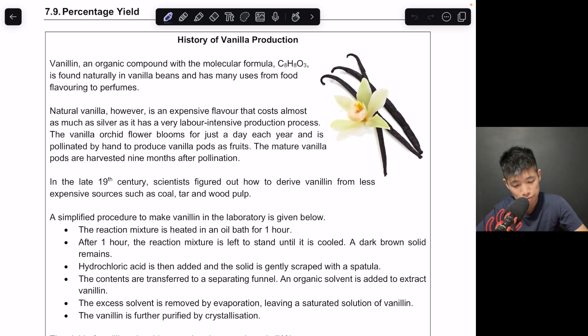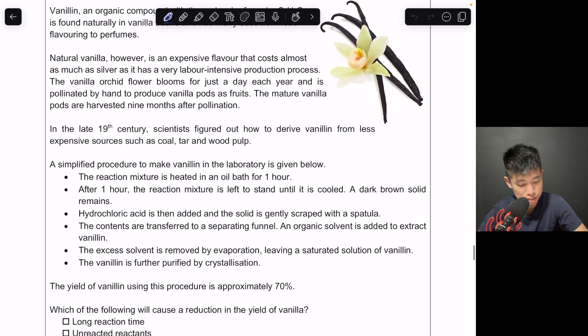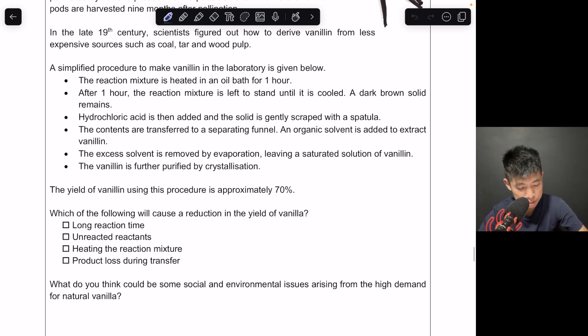It also takes time for the vanilla to actually grow and there are certain months where you can harvest it. So in terms of meeting the demand, there needs to be some other solutions rather than just rely on growing these vanilla pods. What scientists did was to try to make the same molecule artificially in the lab using different starting materials. One of the earlier methods is shown over here where they actually used sources such as coal, tar or wood pulp, which is much cheaper than growing and harvesting the actual plant itself.